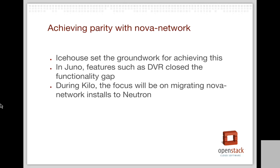One of the first things I wanted to highlight is parity with Nova Network. This work has been ongoing for a couple of cycles, starting in Icehouse where we set the groundwork, and continuing in Juno where features like DVR really closed the functionality gap between Neutron and Nova Network. During Kilo we're going to work on migrating Nova Network installs to Neutron, working between the Nova and Neutron teams to get something in place that covers a certain amount of migration use cases.